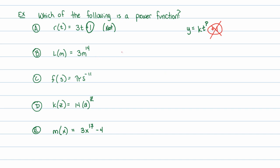The next one: is it of the form y equals some number times the variable to a power? Yes — the number here is 3 and the power is 14, so this is definitely a power function. Example C: is it of that form? The number out front is pi — remember, pi is a number, not a variable — and the power is negative 11. So that is definitely a power function as well.